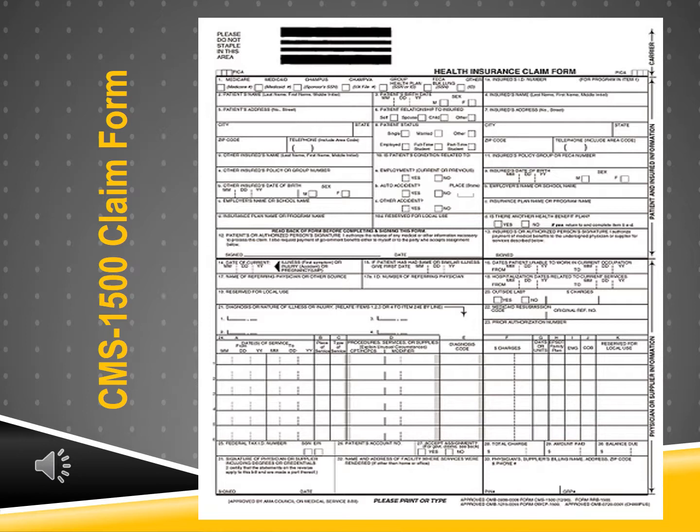In the Harris Care Tracker activities, we will build a CMS paper form, as we cannot electronically submit claims for obvious reasons. In Chapter 9, when we generate a paper form and choose Paper 1500, the system would complete a CMS-1500 paper form. Unfortunately, we will not actually see a completed CMS-1500 in the Harris Care Tracker system.